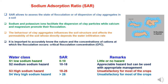On the basis of sodium adsorption ratio, water is classified into four categories. When SAR is from 0 to 10, it comes under class S1 — low sodium hazard — with very minimum to no hazard. When SAR ranges between 10 to 18, it comes under class S2 — medium sodium hazard — with appreciable hazards, but it can be used with appropriate management practices. SAR from 18 to 26 comes under S3 — high sodium hazard — unsatisfactory for most crops. And SAR more than 26 is class S4 — very high sodium hazard — unsatisfactory for most crops.